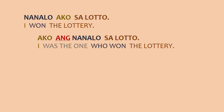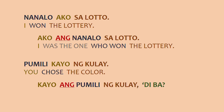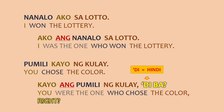Okay, one last example. Pumili kayo ng kulay means you chose the color. But if you say, kayo ang pumili ng kulay, di ba? This would mean it was you who chose the color, right? Or, you were the one who chose the color, right? And a little side note: di ba means 'right.' Di is the shortened form of hindi, or 'no' in English, and ba is a word that we add to questions in Tagalog. So if you use di ba, you're asking or confirming if something is correct.